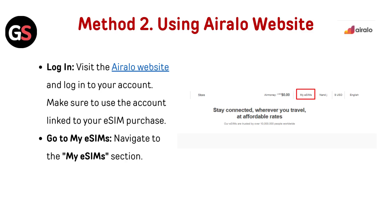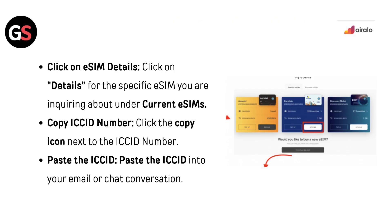Go to My eSIMs. Navigate to the My eSIM section and click on eSIM details. Click on details for the specific eSIM you are inquiring about under Current eSIMs.